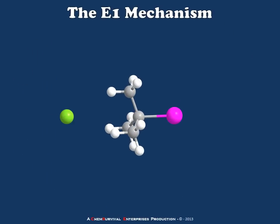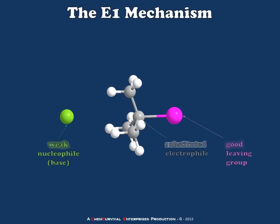The first mechanism we're going to discuss today is the E1 mechanism. An E1 mechanism has a tendency to occur when we have a weak nucleophile, a highly substituted electrophile, and a fairly good leaving group. So we have most of the ingredients necessary for an SN1 reaction, but we don't have a very good nucleophile. Let's take a look at how that affects this reaction.